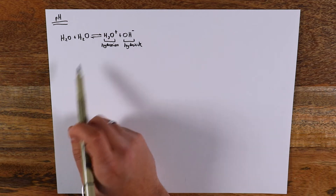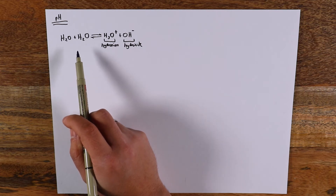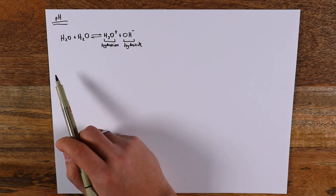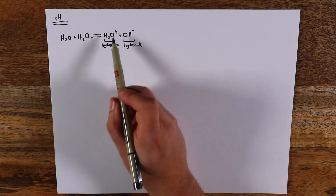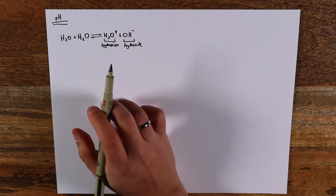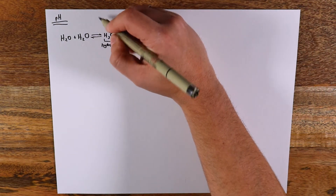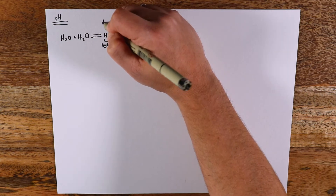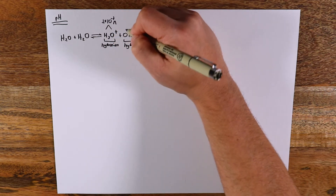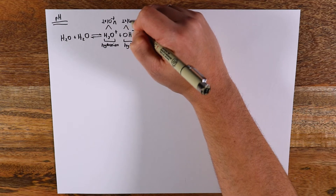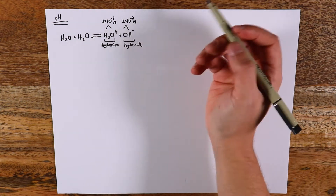These reactions are both happening at exactly the same rate, and this is what we call a chemical equilibrium — the reactions are happening at the same rate in one direction and in the other. When you measure the concentration of these two ions in pure water without any atmosphere, you have that the concentration of H3O+ is 1×10⁻⁷ molar, and the concentration of OH⁻ is the same: 1×10⁻⁷ molar.